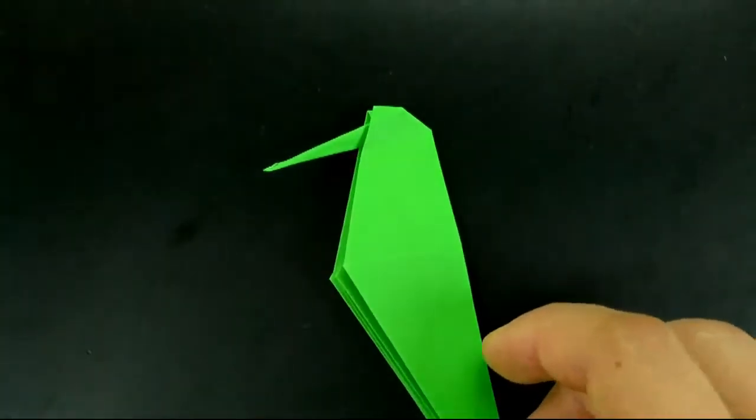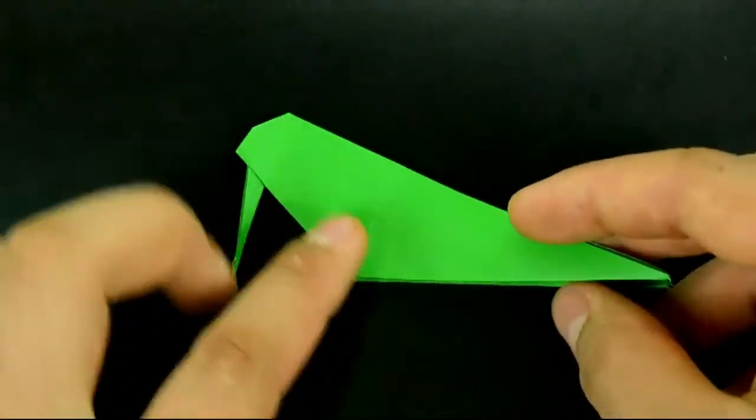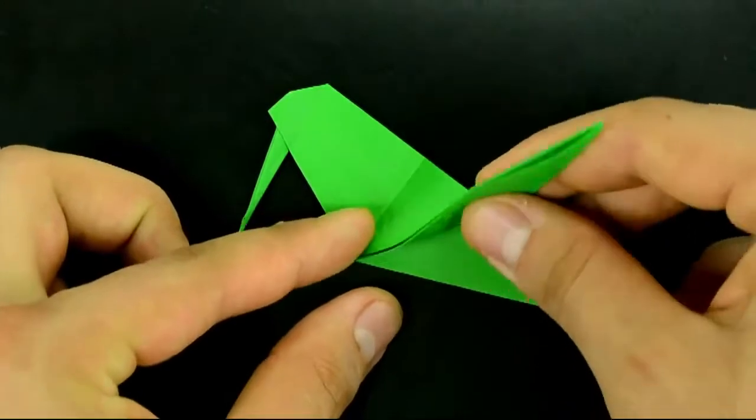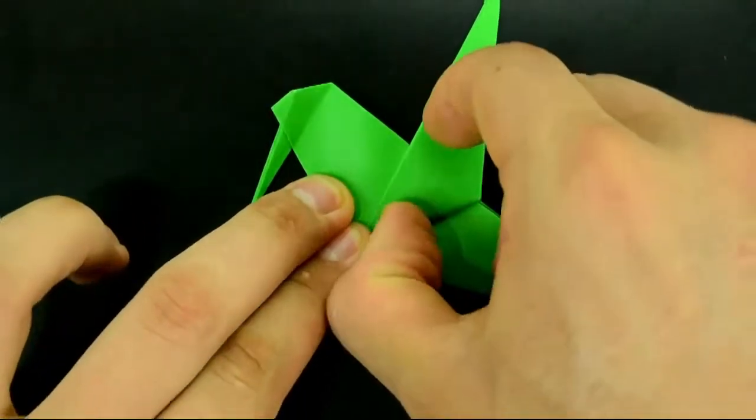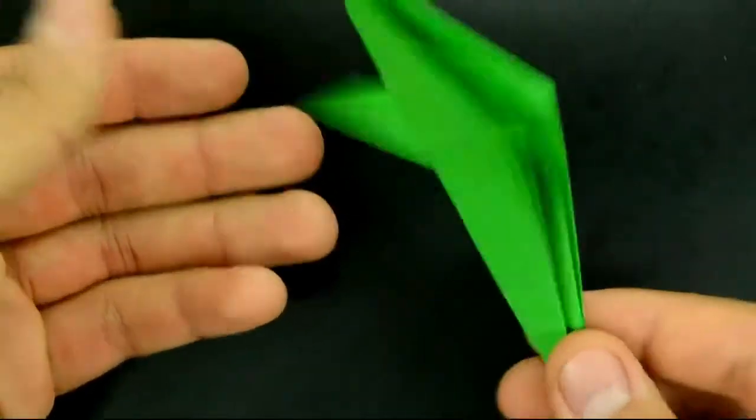Now, to make the wings. Just fold these flaps on the middle with a few inclination. Something like that. Try to do the same on the other side.